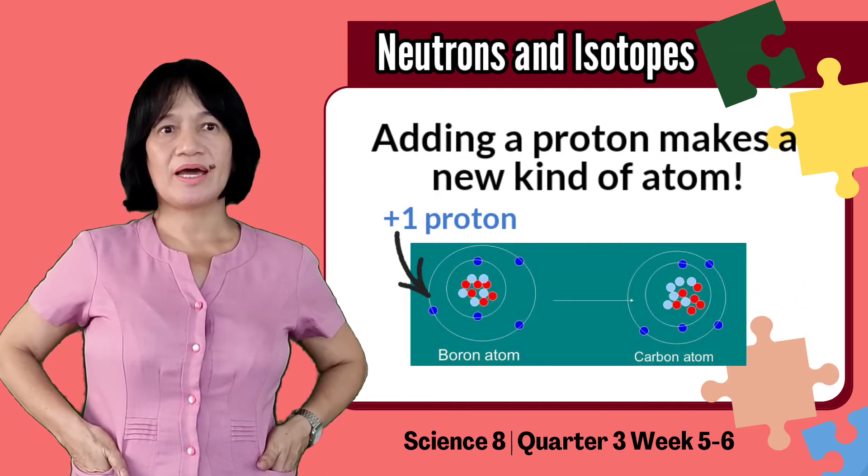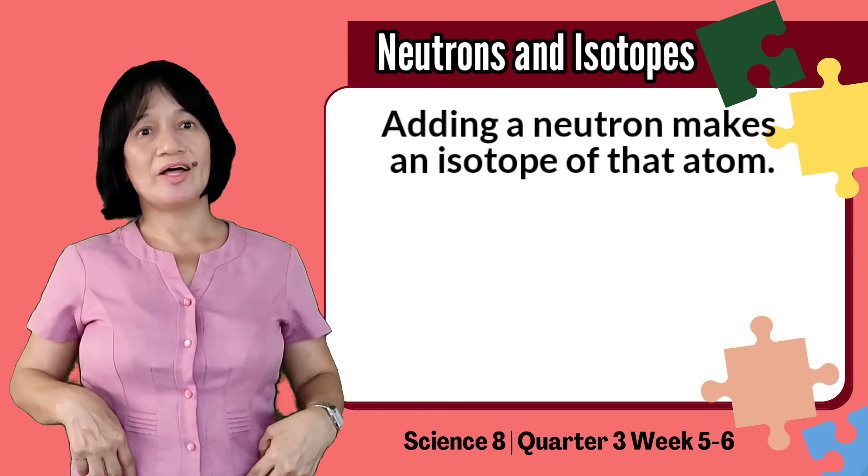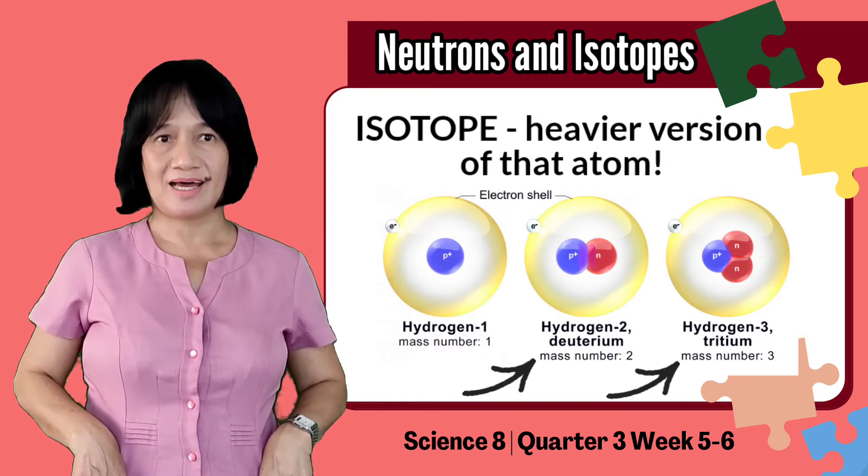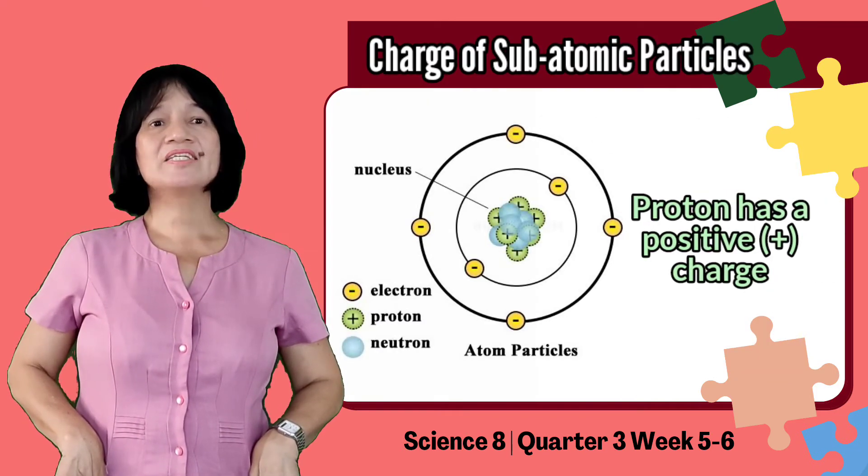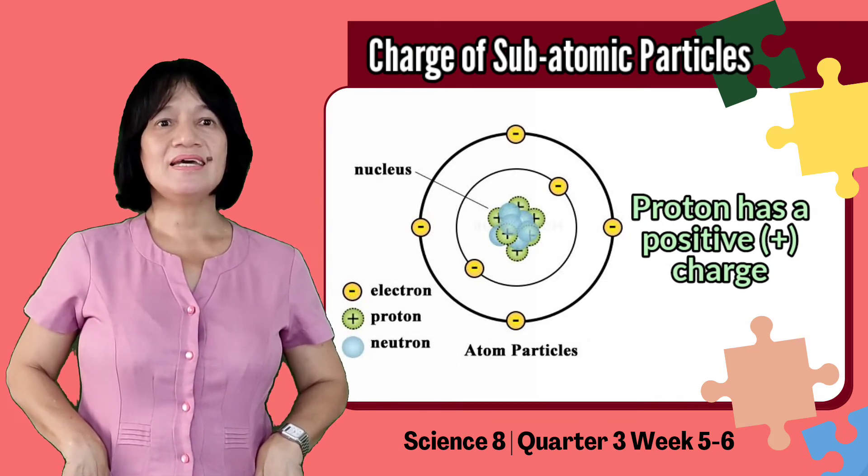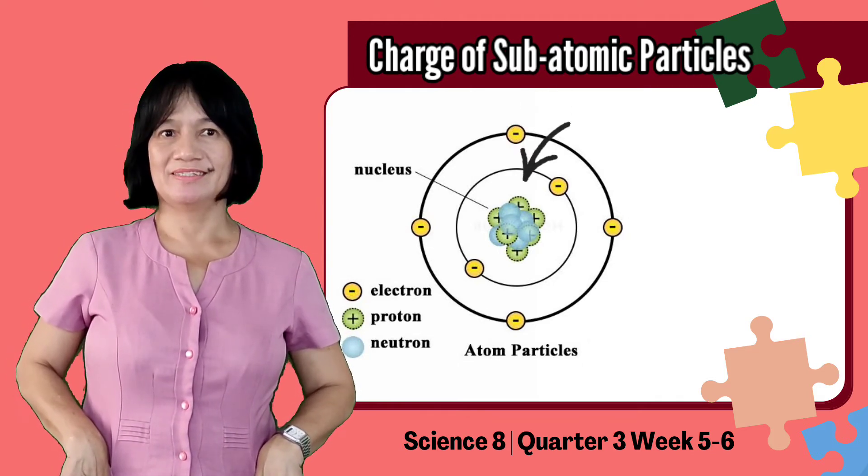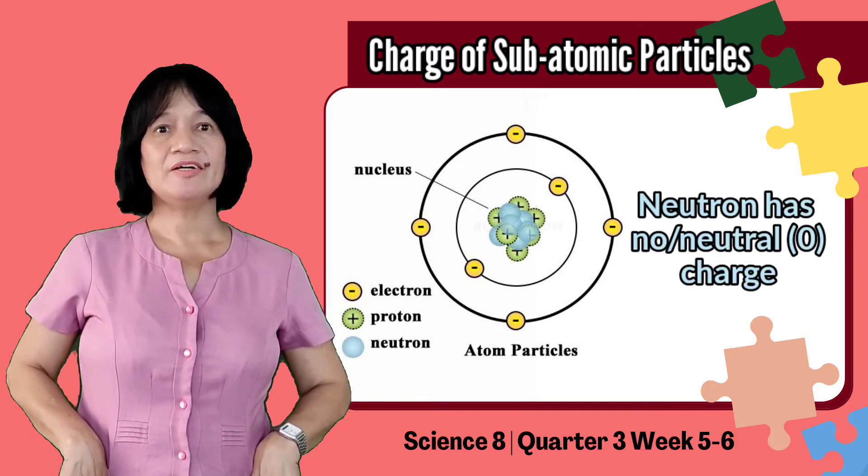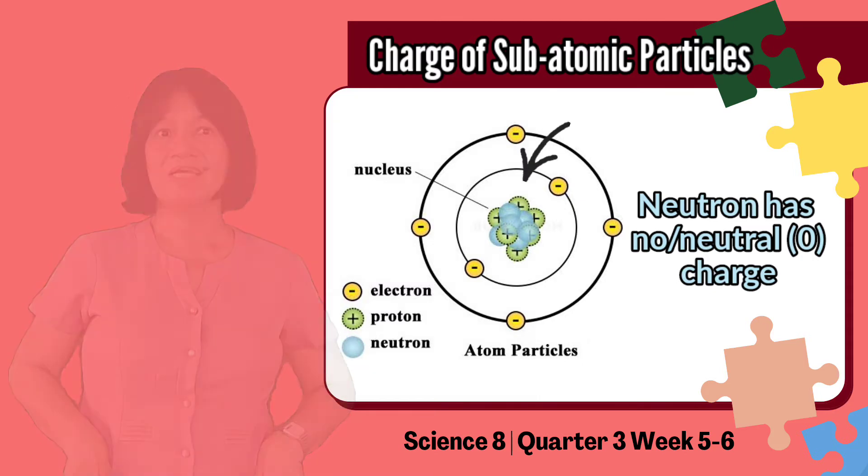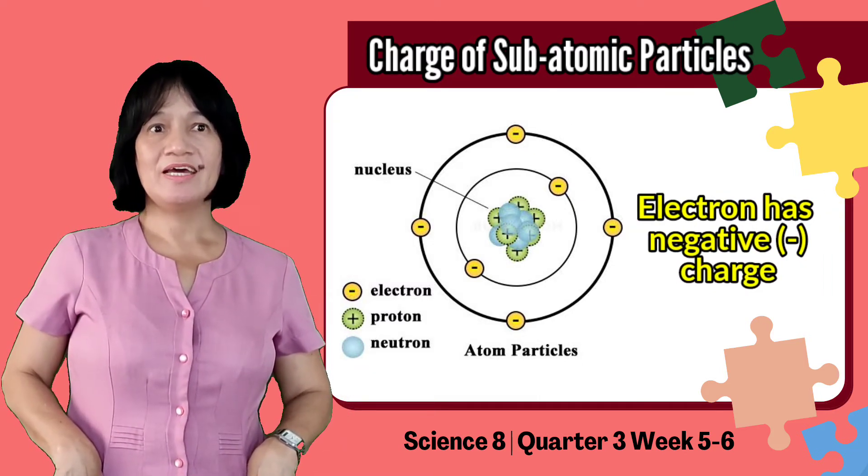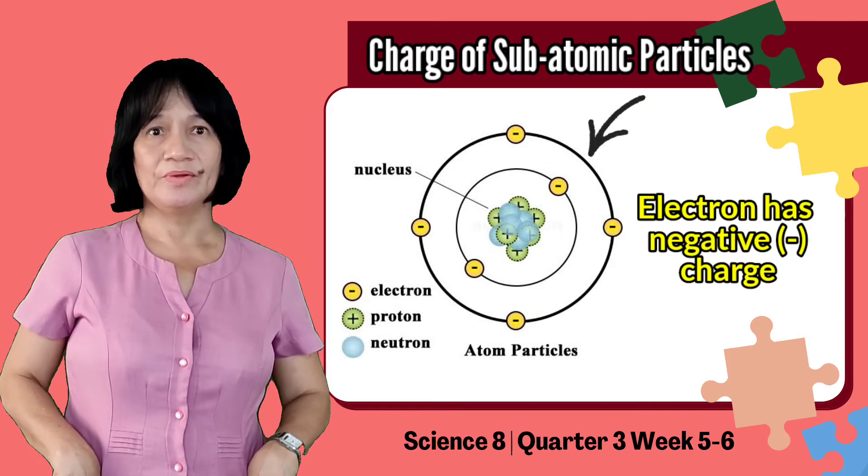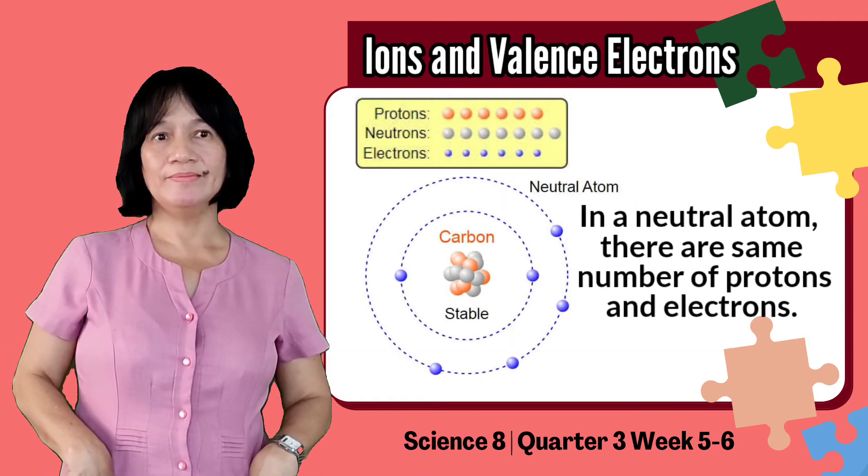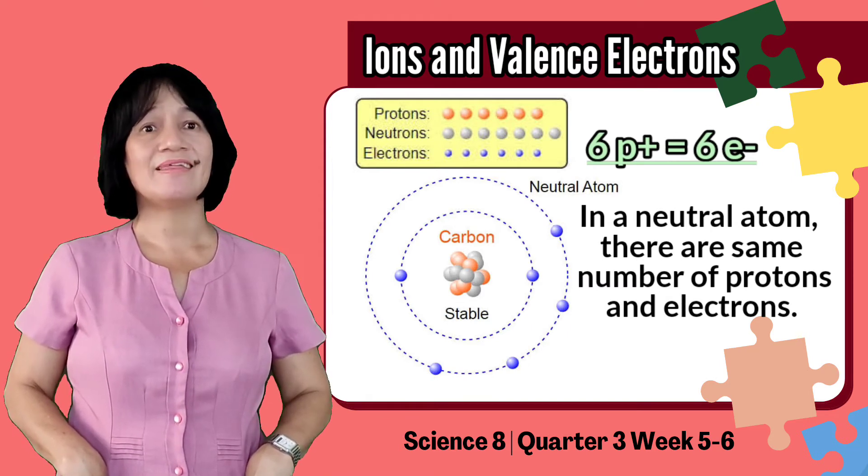Adding a proton makes a new kind of atom. Adding a neutron makes an isotope of that atom, a heavier version of that atom. A proton has a positive charge, and it is located in the nucleus. Neutrons, on the other hand, have no charge. Similar to protons, they are also located in the nucleus. Electrons have negative charge. They orbit the nucleus of an atom and are very small, basically no mass. In a neutral atom, there are the same number of protons and electrons.